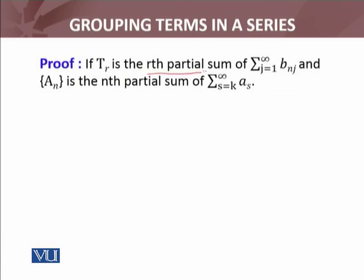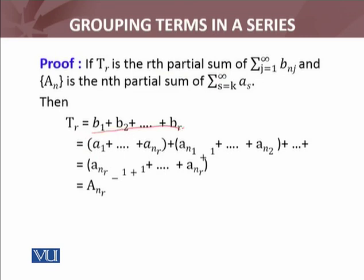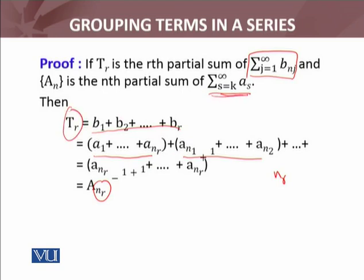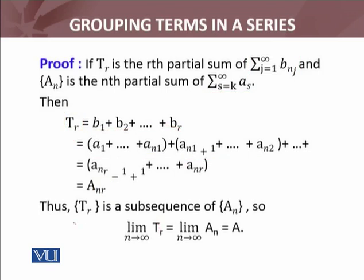इसको proof करते हैं। If t_r is the r-th partial sum of the grouped series (the b_{n_j} series), and a_n is the nth partial sum of the original series starting from k to infinity, then t_r — जो partial sum है grouping से obtained series का — for each group there are several terms of the original series. So there must exist some integer n_r such that this partial sum t_r equals the n_r-th partial sum of the original series, क्योंकि उसी का group हमने बनाया हुआ। Thus, t_r is a subsequence of a_n.